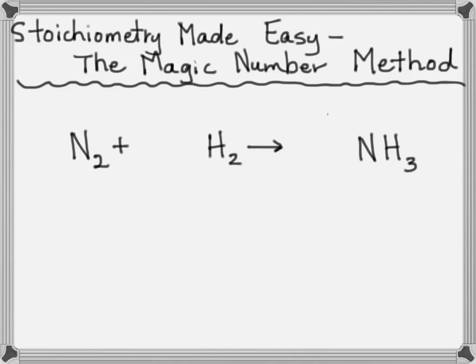Let's start with an example. Nitrogen and hydrogen gas combine to form ammonia. First thing you've got to do is balance the equation. If you don't know how to do that, see another video or ask your teacher. We're going to assume you know how to balance a chemical equation.